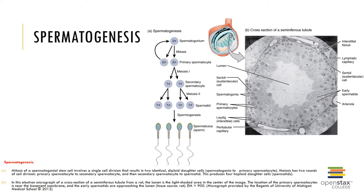In the mitosis of spermatogonia, each division of a diploid spermatogonium produces two daughter cells: one is a spermatogonium that remains in contact with the basal lamina of the tubule, and the other is a primary spermatocyte that is pushed towards the lumen of the tubule as meiosis one begins. Each primary spermatocyte contains 46 individual chromosomes. At the end of meiosis one, the daughter cells are called secondary spermatocytes.